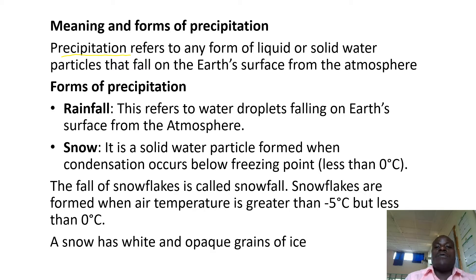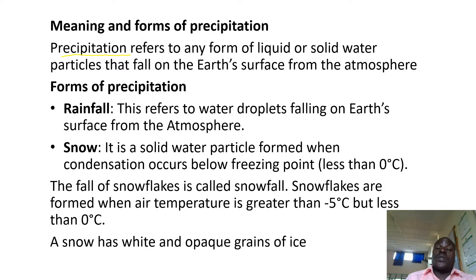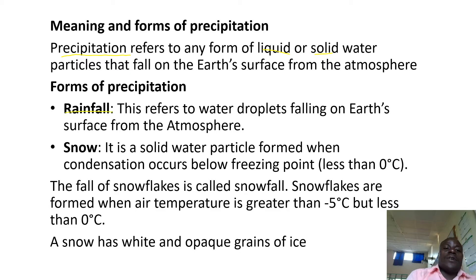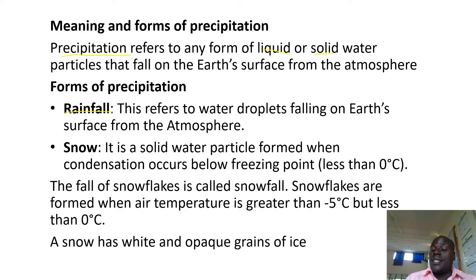So what is precipitation? Precipitation refers to any form of liquid or solid water particles that fall on the earth's surface from the atmosphere. Precipitation can be in liquid or solid form. Forms of precipitation — number one: we have rainfall. This refers to water droplets falling on the earth's surface from the atmosphere, which means rainfall is in a liquid state.